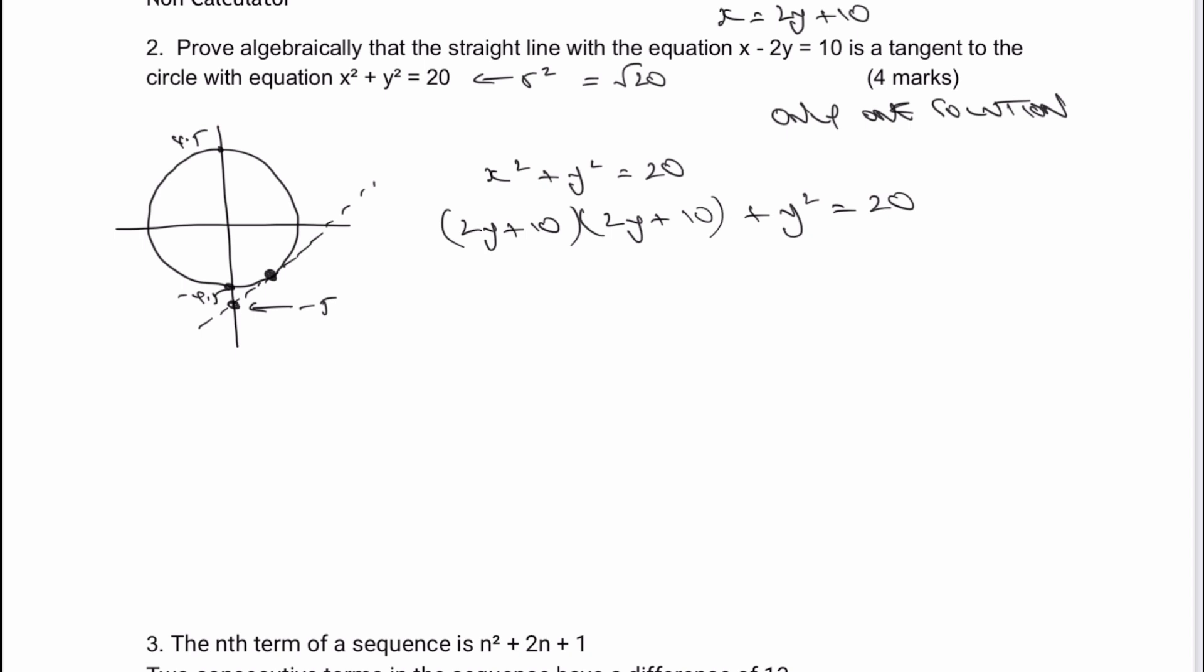Now, you might do things slightly differently to me, but hopefully we'll both end up with the same solution. So I'm just going to work through. I've got 4y squared plus 40y plus 100, which is the expansion of those brackets. And then I've got plus y squared equals 20. Now, I need to put this in a form that I can actually work with. So therefore, I'm going to write that as 5y squared plus 40y. And I've got plus 100 minus 20 is going to be plus 80 equals 0.